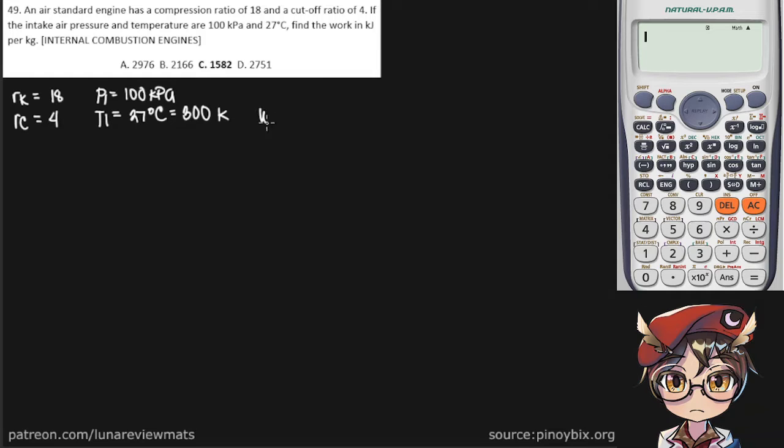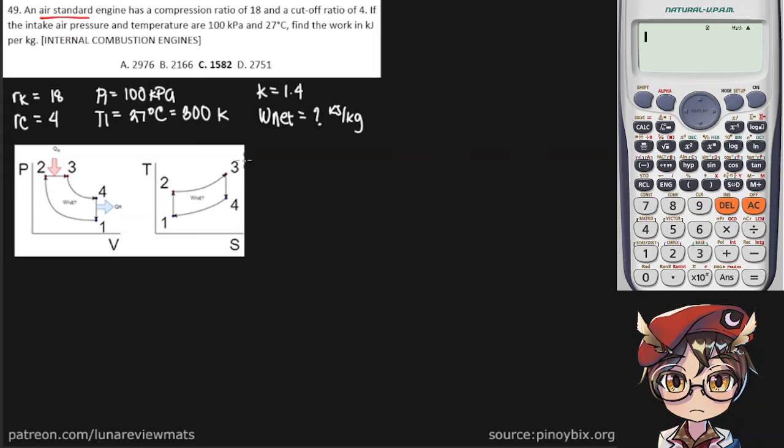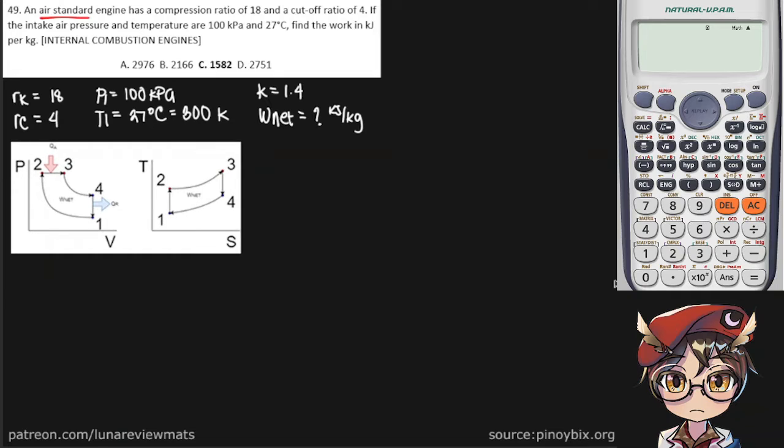So we're actually trying to find the net work of the process in kilojoules per kilogram. And of course, since this is air standard, we can assume our specific heat ratio is 1.4. And here is a diagram of the diesel cycle, which you should have memorized since it makes things a lot easier.